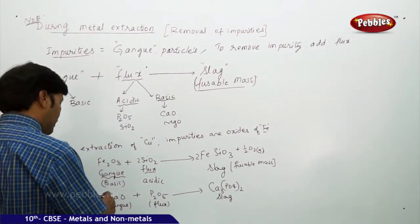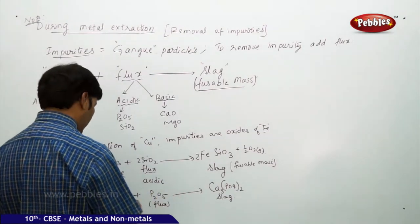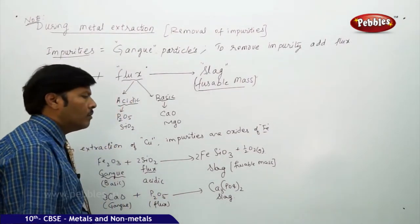Balance the equation, take 3 over here, and already balanced, 4 to 8, 3 plus 5, 8, everything is balanced. You get a fusible mass.